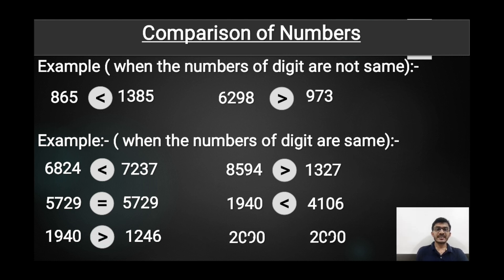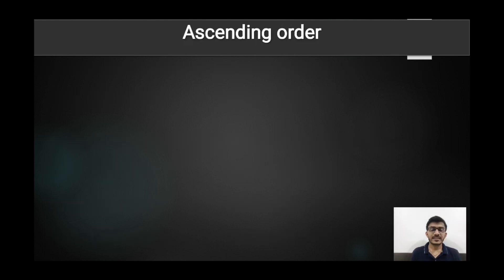Last example: 2090 and 2090 — both numbers are equal, so we put an equal sign between them. Next topic is ascending order.